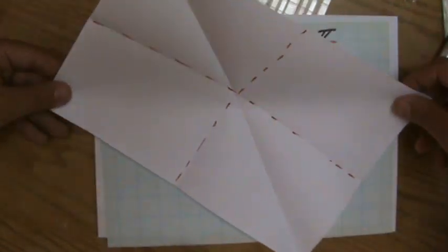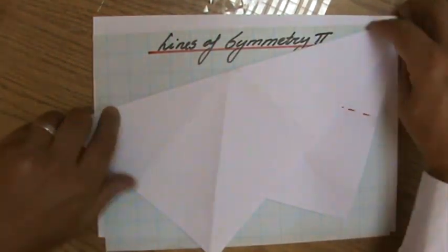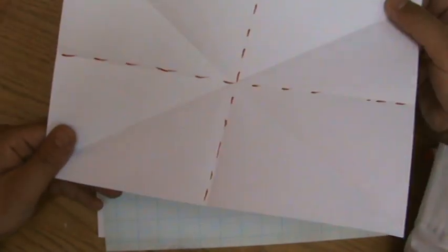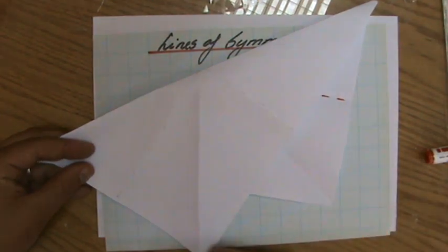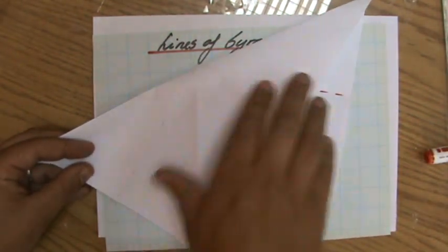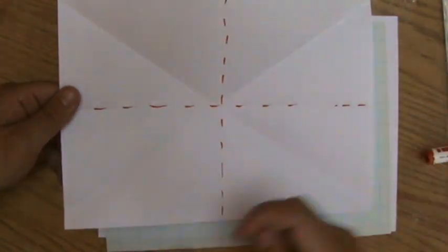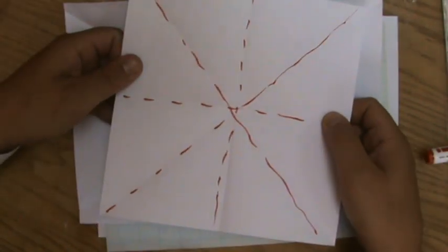What about the other diagonal, from one angle all the way to the other one? Is that a line of symmetry? No, it is not. So a rectangle, as you can see, because those diagonals are no lines of symmetry, because the sides are not exactly on top of each other, a rectangle has two lines of symmetry, while a square has four lines of symmetry.